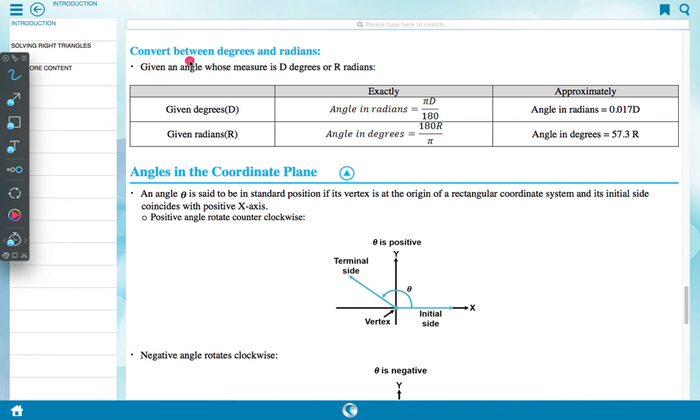Convert between degrees and radians. Given an angle whose measure is d degrees or r radians exactly. Given degree d exactly, angle in radians is equal to pi d upon 180. Approximately angle in radians is equal to 0.017d. Given radian r, angle in degrees is equal to 180r upon pi. Angle in degrees is equal to 57.3r.